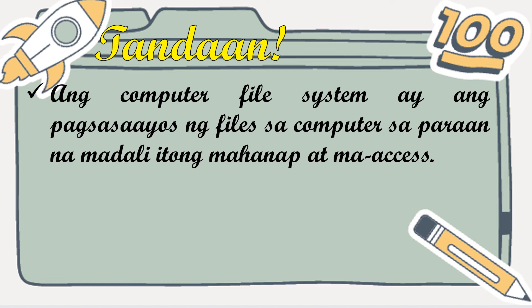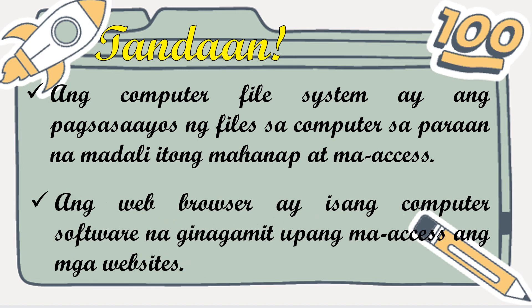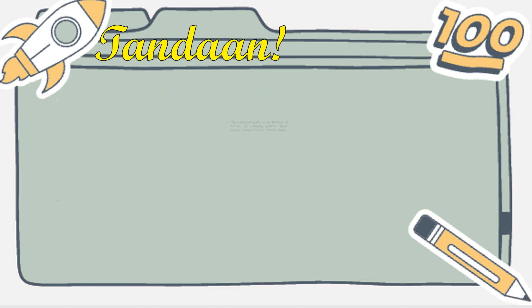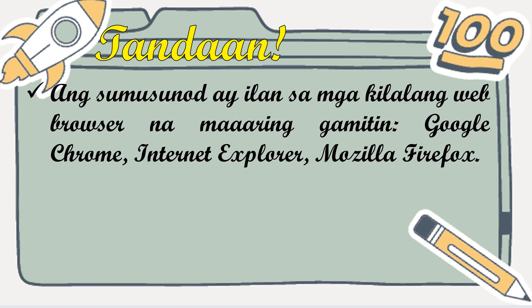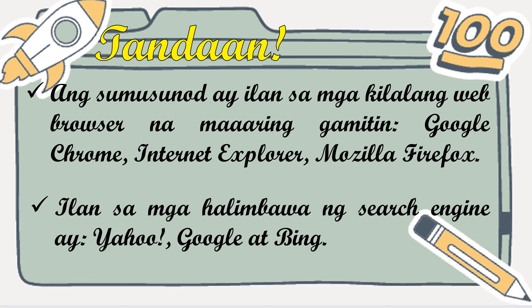Tandaan: ang computer file system ay ang pagsasayos ng file sa computer sa paraan na madali itong mahanap at ma-access. Ang web browser ay isang computer software na ginagamit upang ma-access ang mga websites. Ilan sa mga kilalang web browser: Google Chrome, Internet Explorer, at Mozilla Firefox. Ilan sa mga halimbawa ng search engine naman ay ang Yahoo, Google, at Bing. Dito na nagtatapos ang ating talakayan. Hanggang sa muli mga bata, paalam! Sampai jumpa!